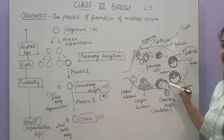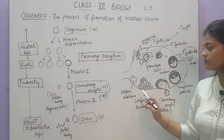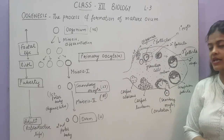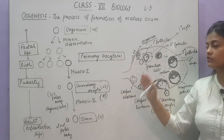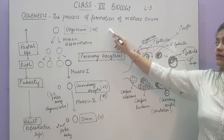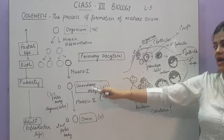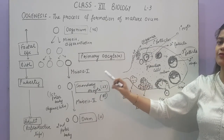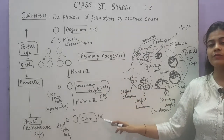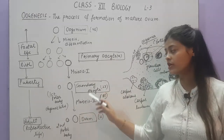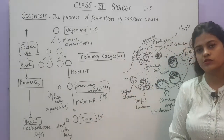After ovulation, the remaining cells in the Graafian follicle will form a structure called corpus luteum, which will then be converted into corpus albicans. We will discuss this in detail during the menstrual cycle. The most important points are: oogonia numbers are fixed in fetal life; primary oocyte numbers are fixed at birth; at puberty the primary oocyte number is again fixed; ovulation occurs at the secondary oocyte stage; and the secondary oocyte is converted into ovum only at fertilization.